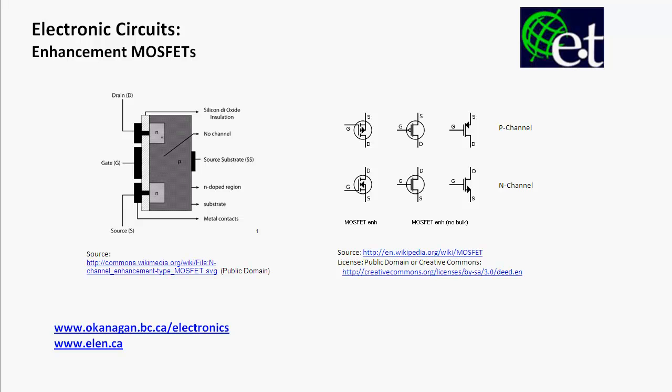In order for this enhancement MOSFET to be able to conduct, we have to apply a positive voltage to the gate. What that will do is push holes away — they're positive charge — bring electrons in, and that's going to build up an N-channel between the drain and the source.